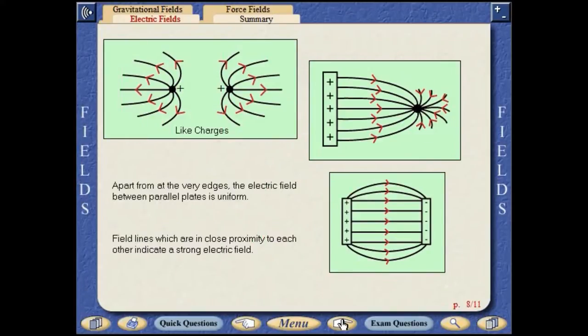Apart from at the very edges, the electric field between parallel plates is uniform. Field lines in close proximity to each other indicate a strong electric field.